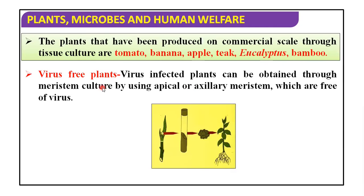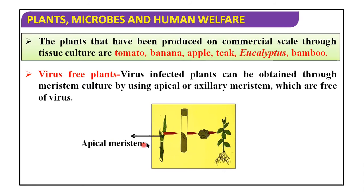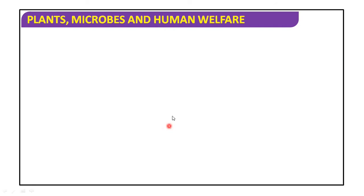Virus-free plants: virus-infected plants can be treated through meristem culture. Meristem culture means where the cell and tissue can grow. Virus-free plants can be obtained from these by using apical or axillary meristem, which are free of viruses. This is our apical meristem, and we can develop virus-free plants from it.